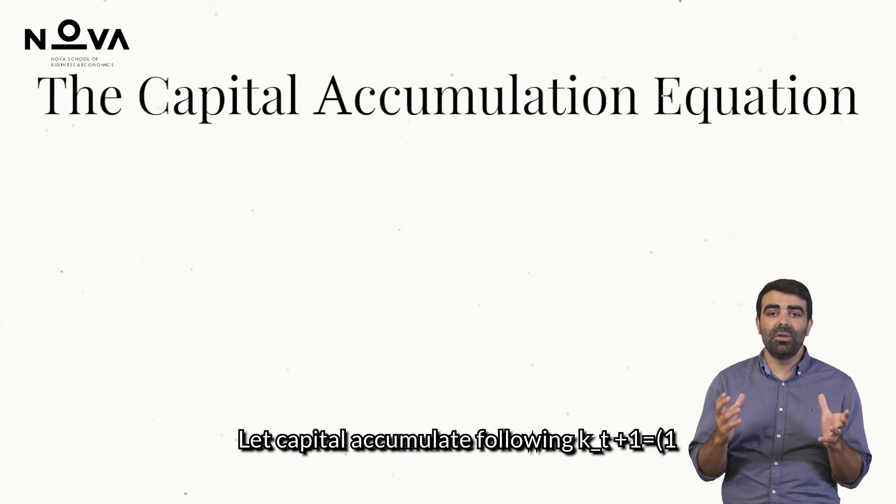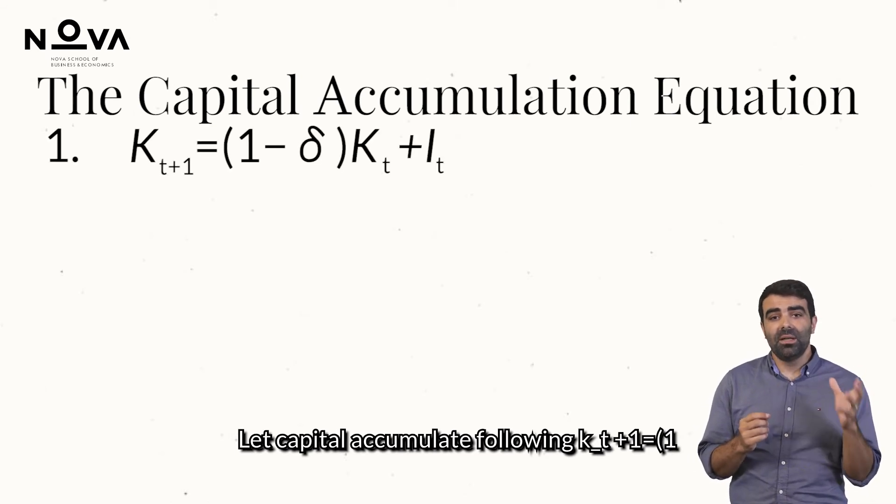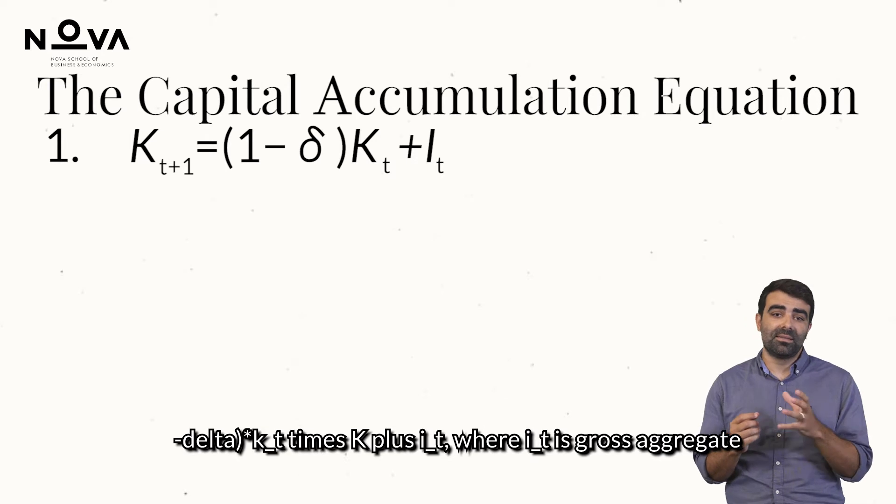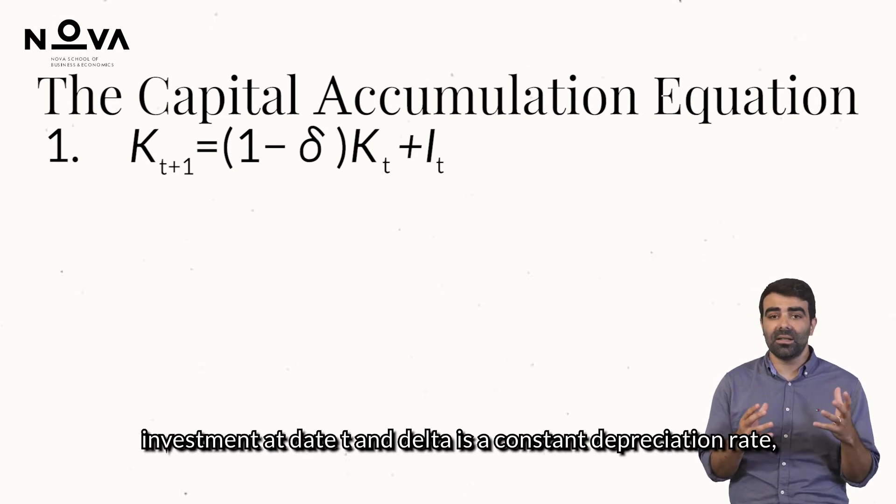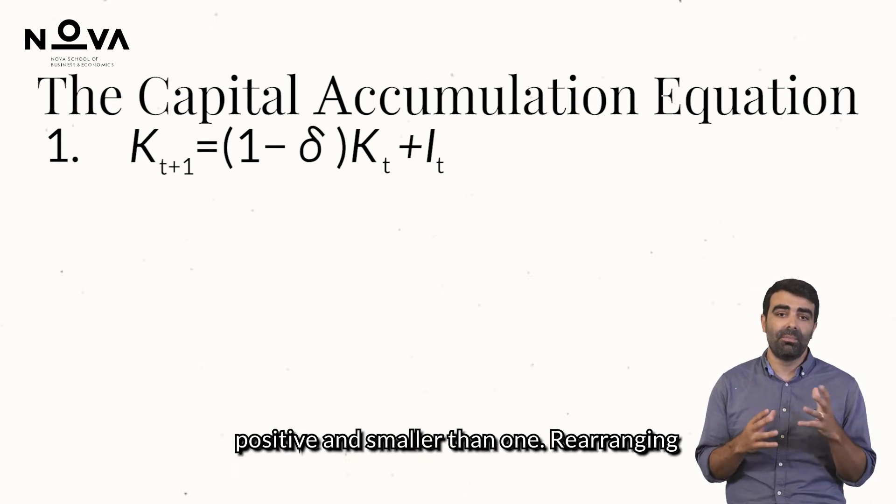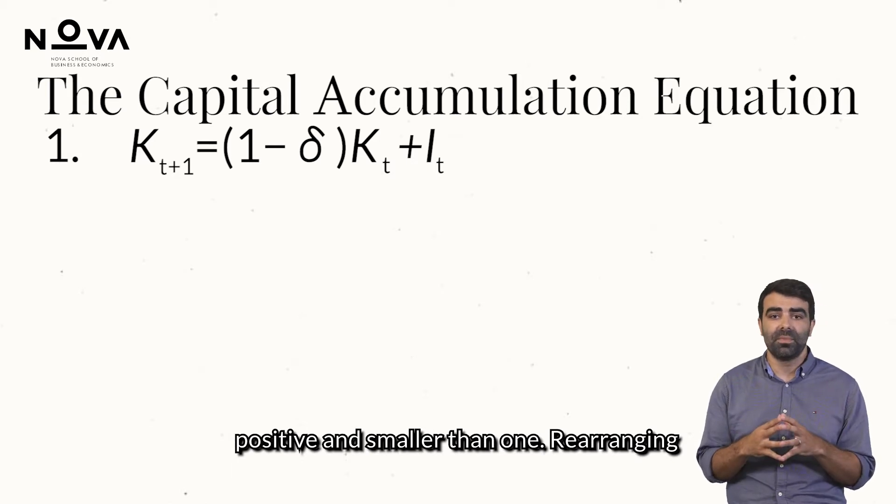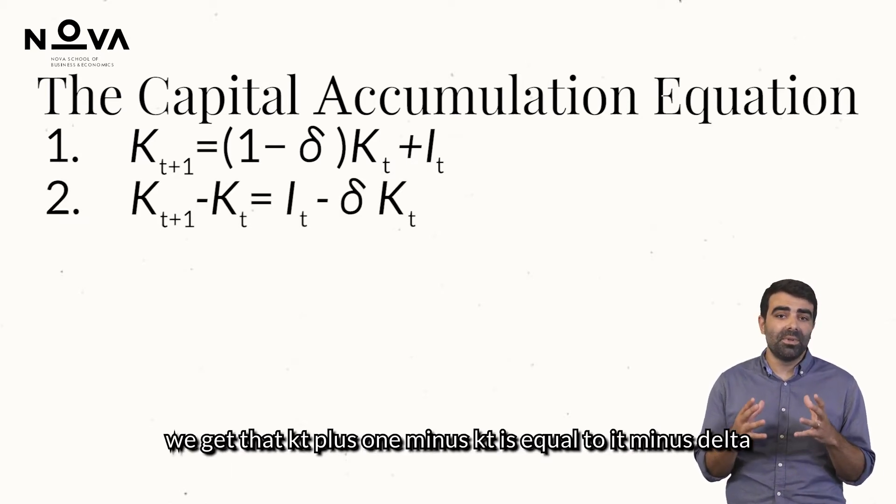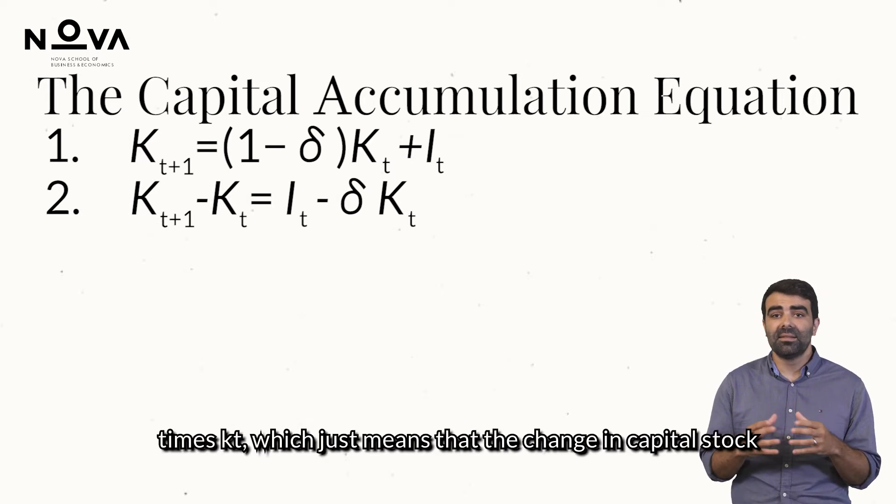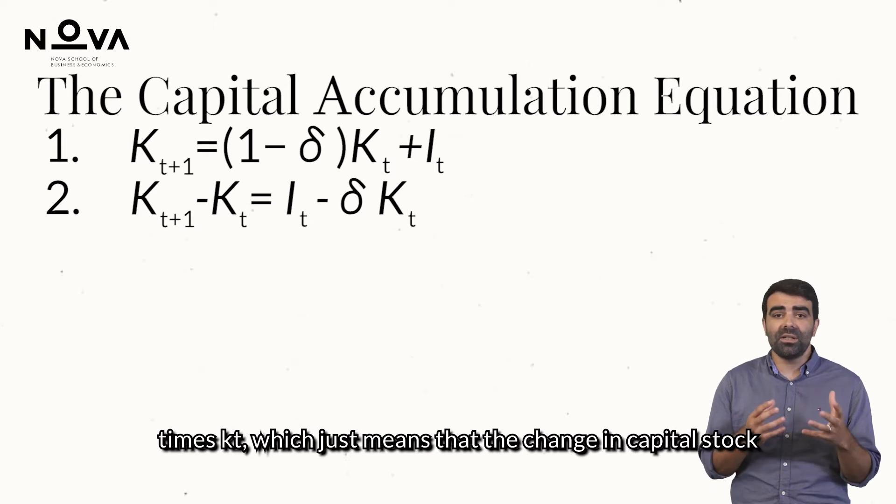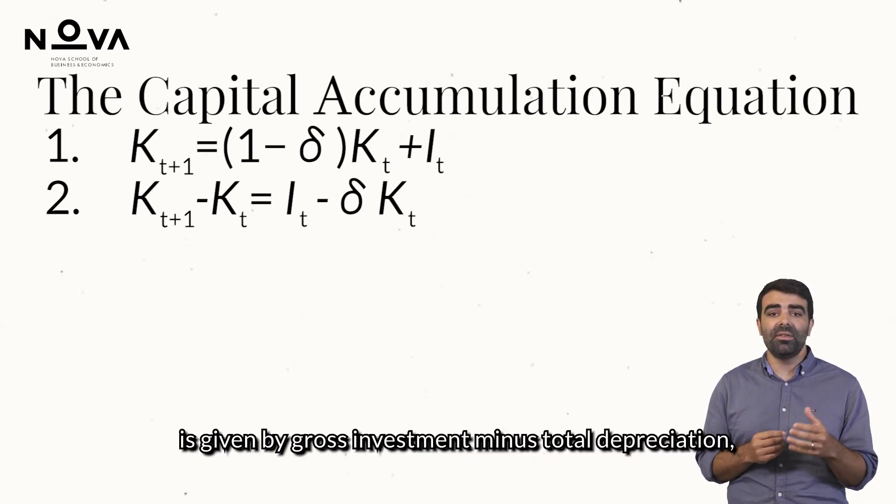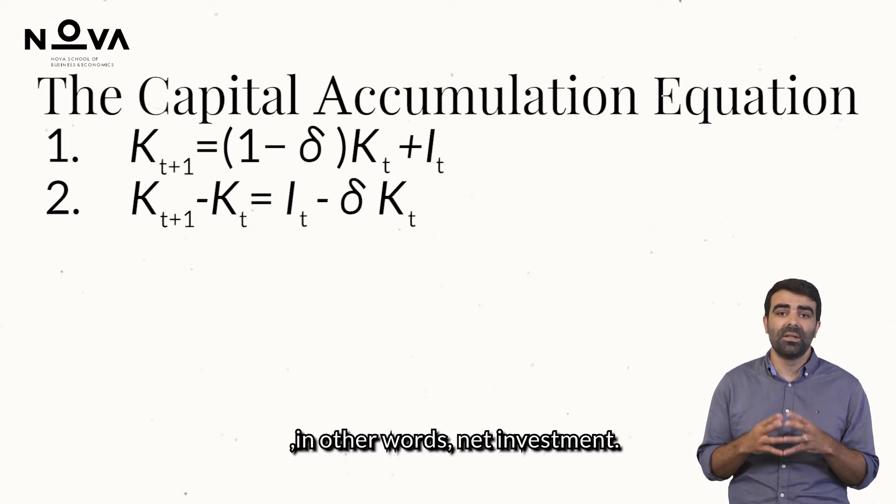Let capital accumulate following kt plus 1 equals 1 minus delta times kt plus it, where it is gross aggregate investment at time t and delta is a constant depreciation rate, positive and smaller than 1. Rearranging, we get that kt plus 1 minus kt is equal to it minus delta times kt, which just means that the change in capital stock is given by gross investment minus total depreciation, in other words, net investment.